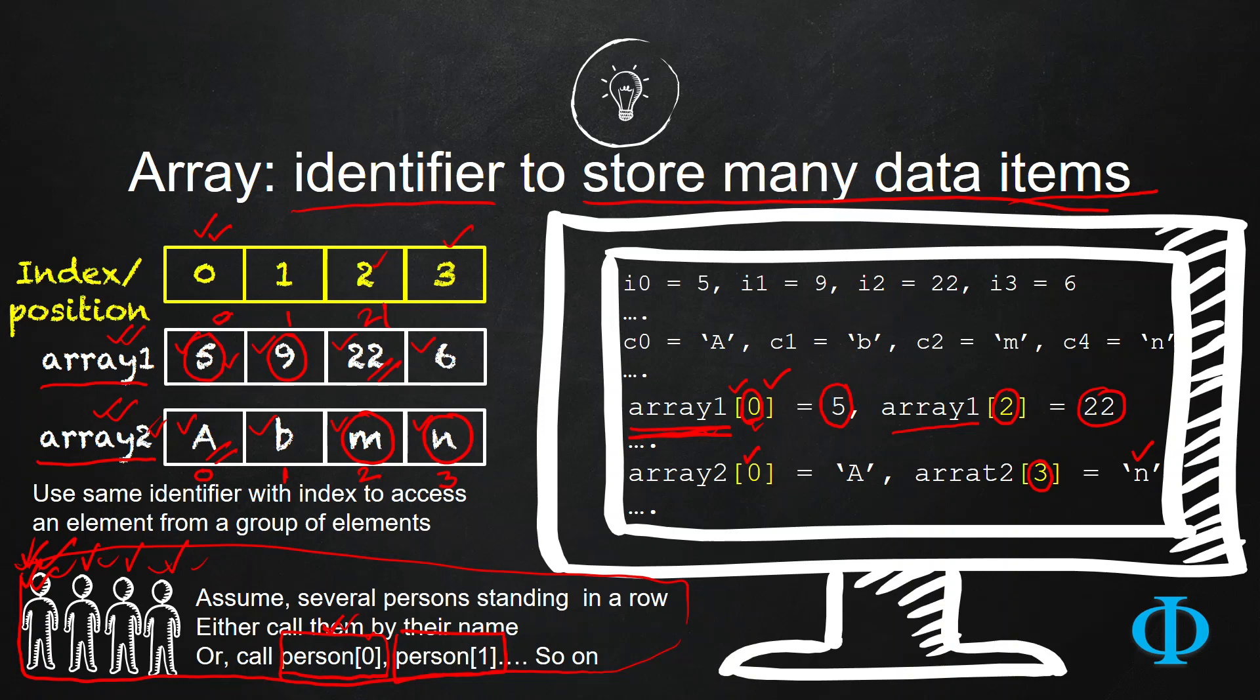So this is how you can store data items. First, you have to use one single variable name like array1, array2, or person like this. And then, utilizing an index like 0, 1, 2, 3, this way you have to access each of the data items stored in them.